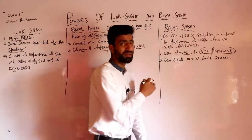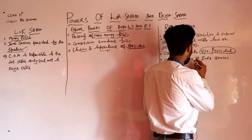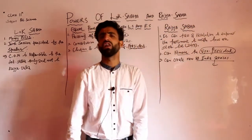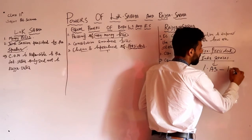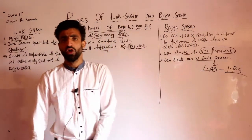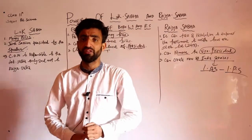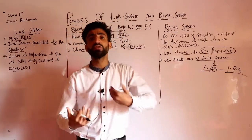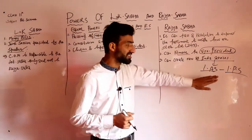Second point - Rajya Sabha has a special power: it can create new All-India Services. New All-India Services, for example IAS - Indian Administrative Service - and IPS - Indian Police Service. So in the interest of the nation, Rajya Sabha can pass a resolution to create new All-India Services, which are common to both centre and state.